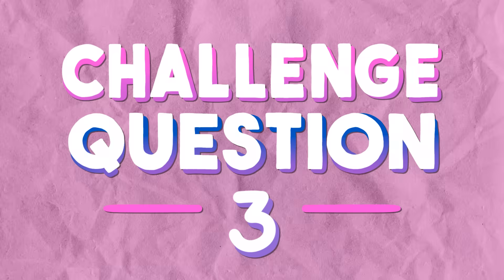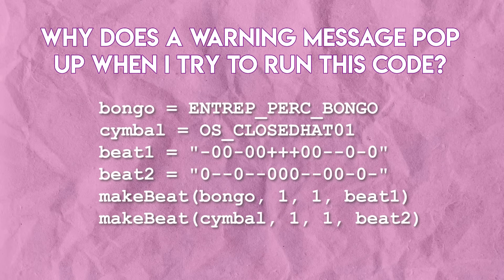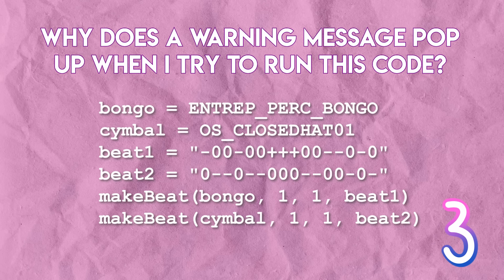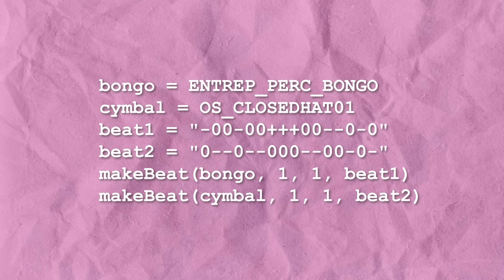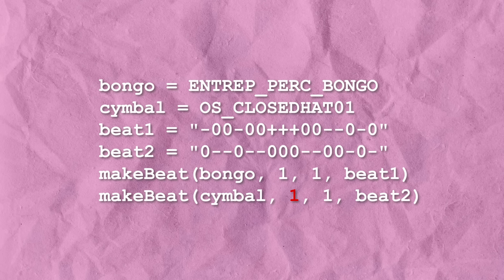Now it's time for our final challenge, question number three. This one is tricky, so look closely at the make beat functions in this code. When I click run, EarSketch gives a warning that there are overlapping clips on track one. What does this mean and how do you fix it? The answer is there's a problem with the second make beat call — we put it on the same track and measure as the first make beat. Instead, we should put it on its own track: track two.